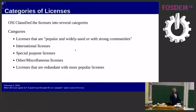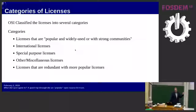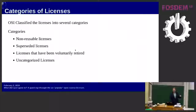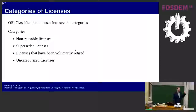But there are actually a lot of other licenses besides those. If you dig a little deeper, they've got other categories too — international licenses, special purpose licenses, miscellaneous licenses, uncategorized licenses, and licenses that have been voluntarily retired. Interestingly, a lot of these categories are kind of meant to indicate to people: don't use these.